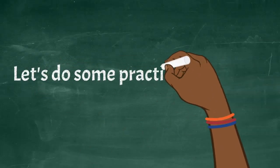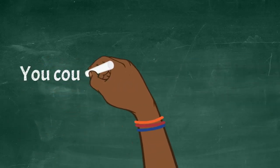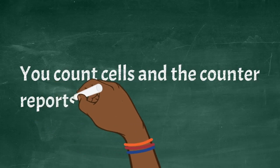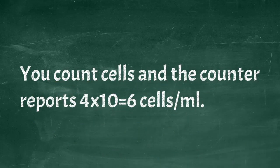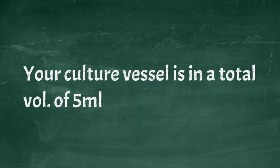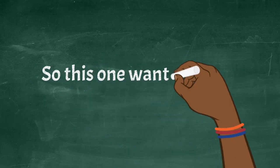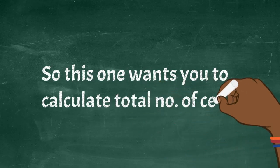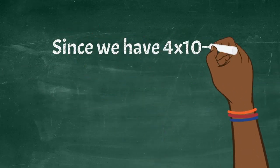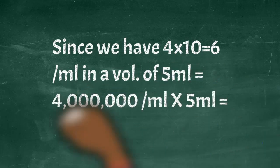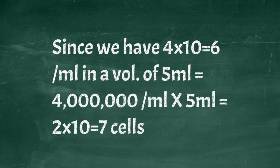Let's do some practice runs to get you ready for the lab. You count cells and the cell counter reports 4 by 10 to the 6 cells, so 4 million cells per ml. Your culture vessel is in a total volume of 5 ml. How many cells do you have in total? This one wants you to calculate total number of cells. Since we have 4 million cells in a ml and we have a total volume of 5 ml, we simply multiply the 4 million cells per ml by the 5 ml total volume, and that gives us 2 by 10 to the 7 cells or 20 million cells.